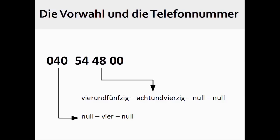With German telephone numbers, however, one usually expresses the dialing prefix or area code as individual numbers, null, vier, null. The actual telephone number is generally divided into a group of numbers that one speaks in the manner taught earlier in this presentation: vierundfünfzig, achtundvierzig, null, null.